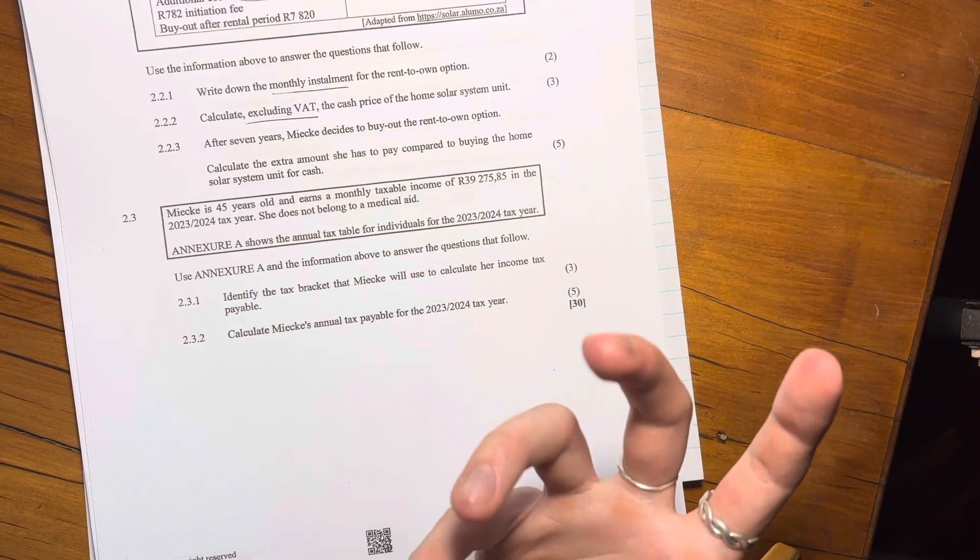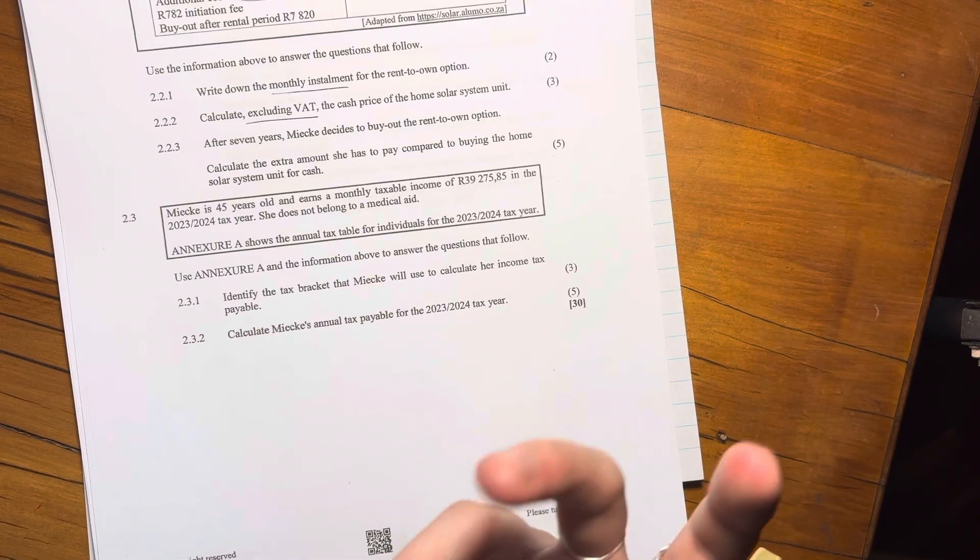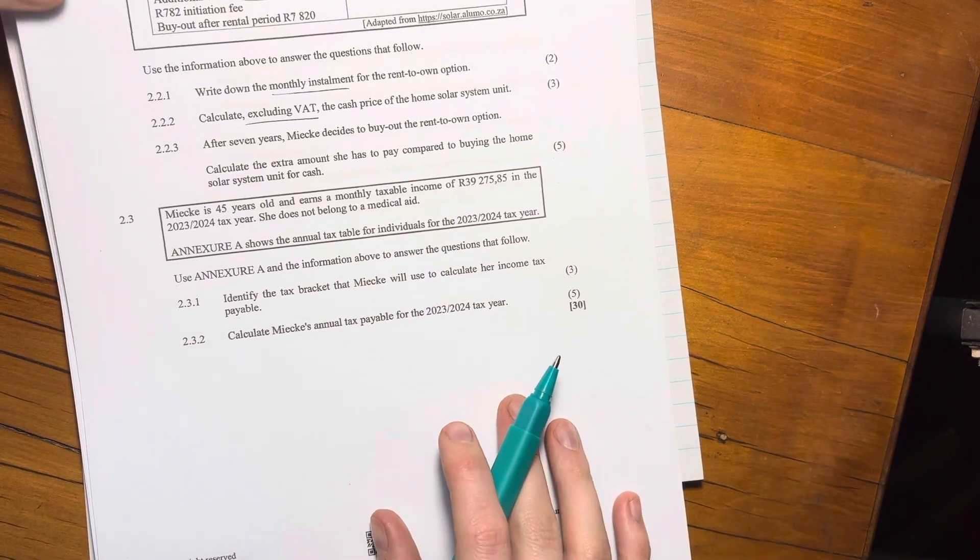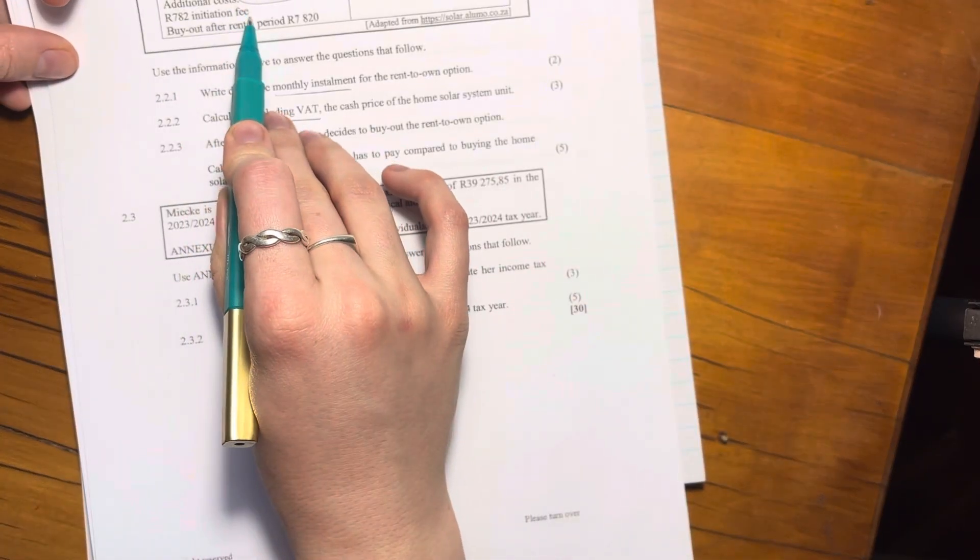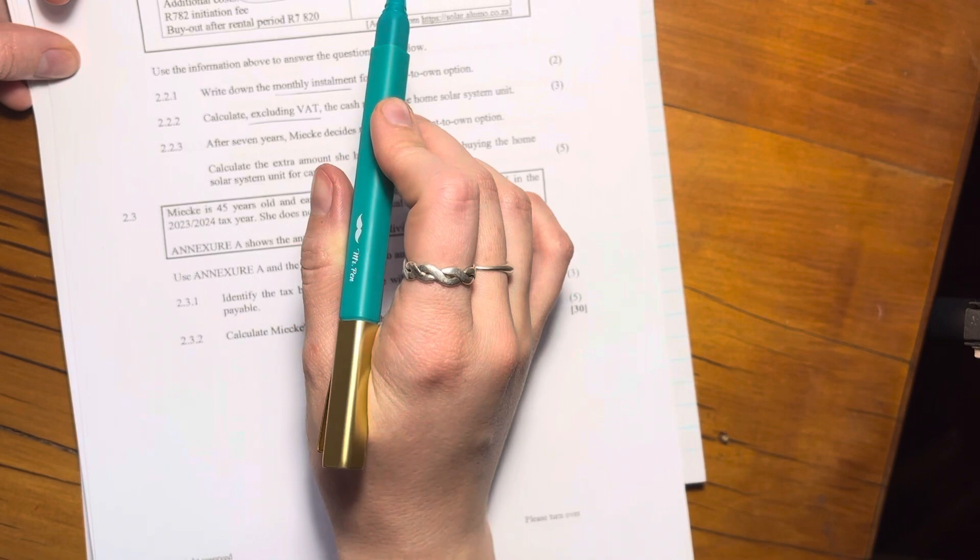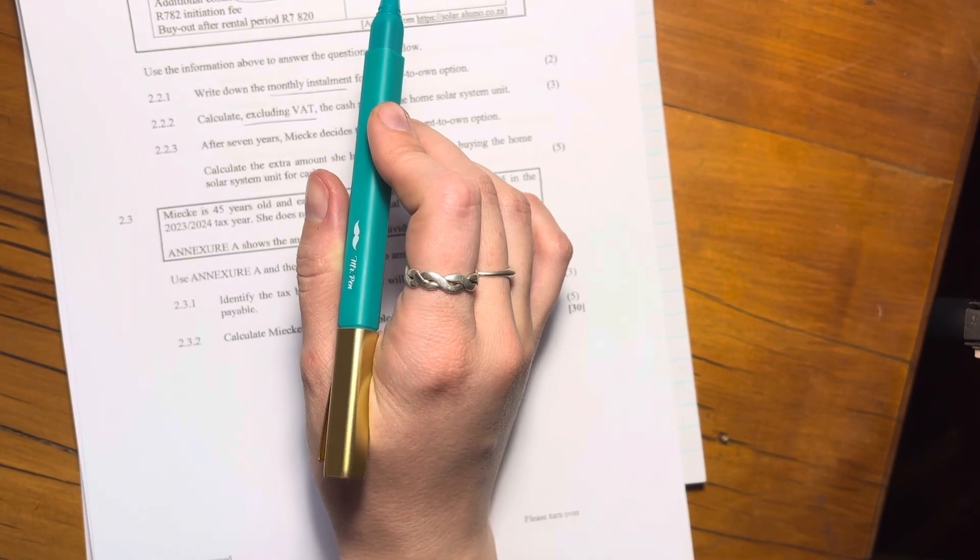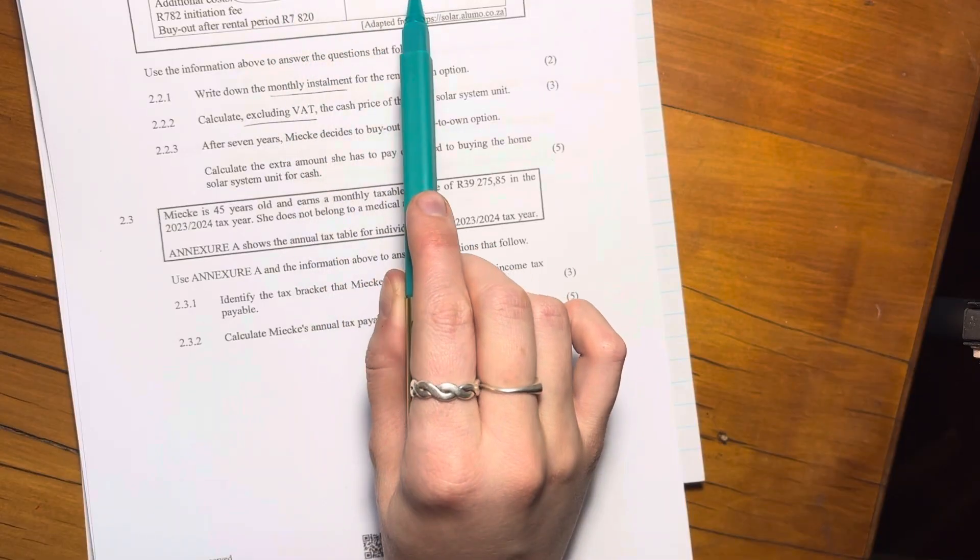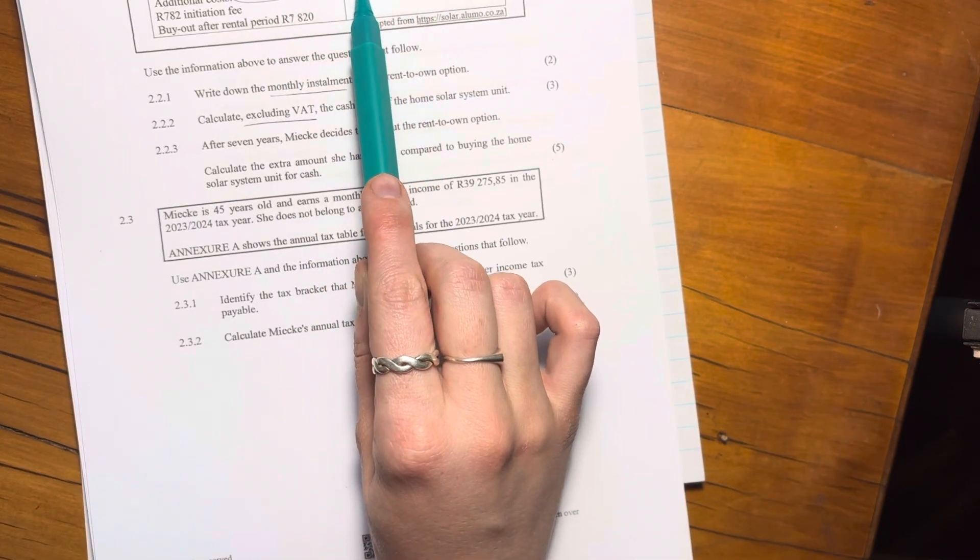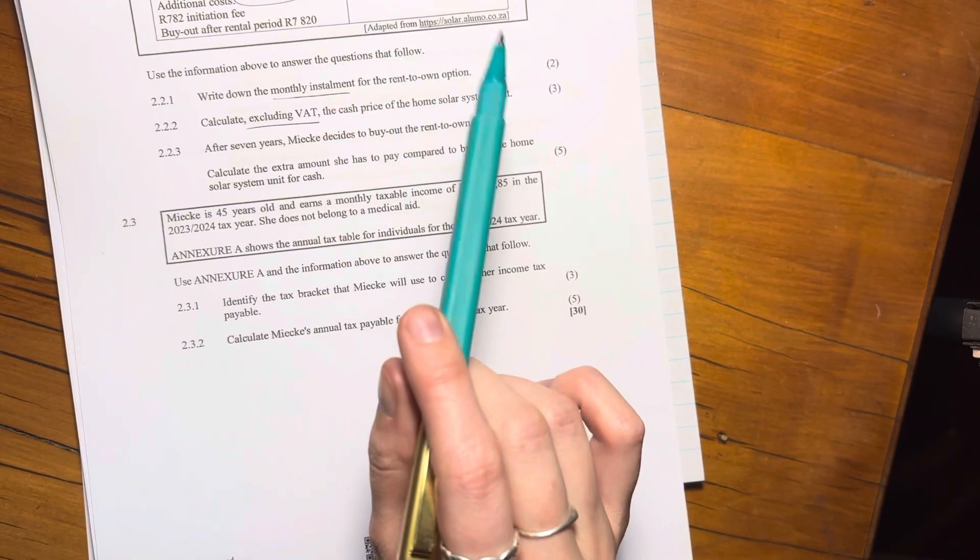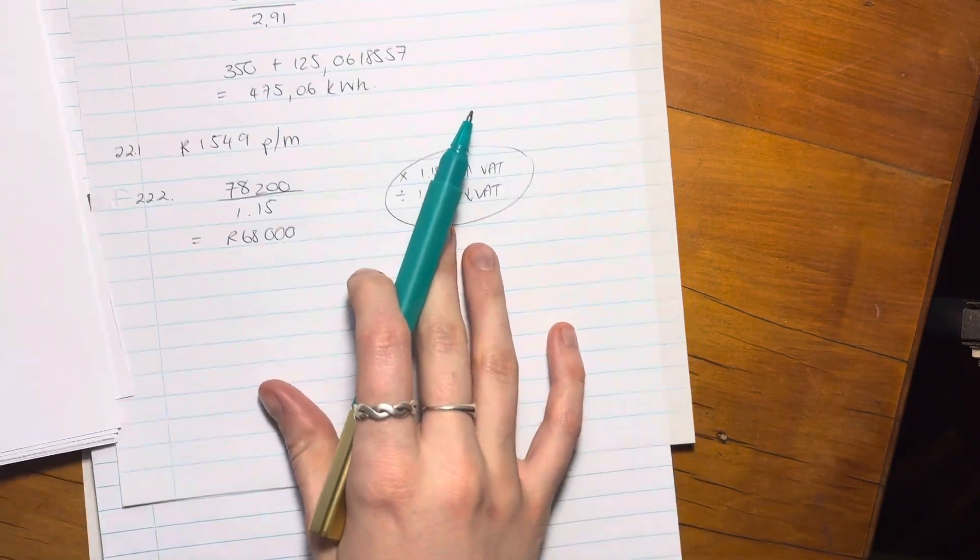Now they haven't given us any interest information. Obviously, in reality, amounts of money can be invested and they can earn interest, but we're not taking that into account now. So let's just literally say, okay, what's the cost of that compared to the cost of that? And just be careful because we need to say, okay, well, what are we comparing? We're comparing both of these because they include VAT. So don't now compare it to the R68,000. We're still comparing it to the R78,000. So let's work out option one, how much it's going to cost.